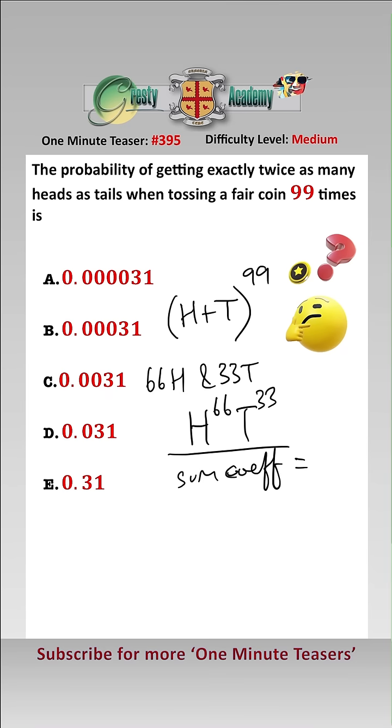And the sum of the coefficients is equal to 2 to the power of 99, and the coefficient of h to the 66, t to the 33 is equal to 99 C 66.